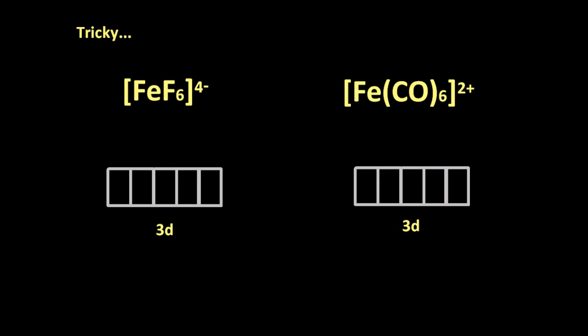And finally, an unpleasant little detail that the IB may ask about. Let's look at these two complexes here. First of all, I want to work out the d orbital for those two iron ions. The first one has an oxidation state of iron of plus two. And the second one also has a plus two oxidation state for iron.